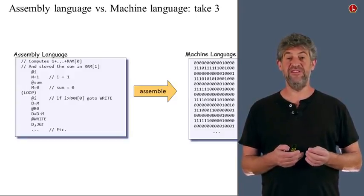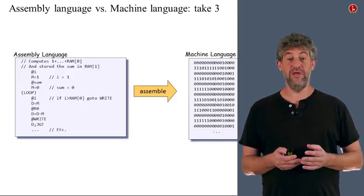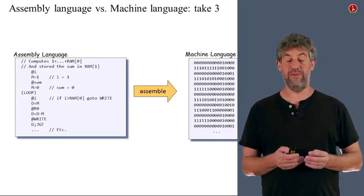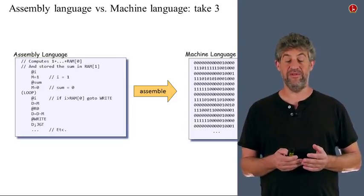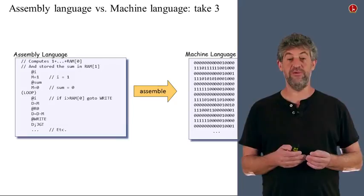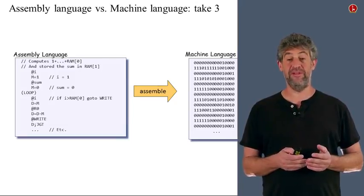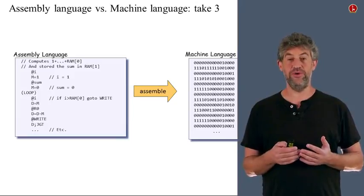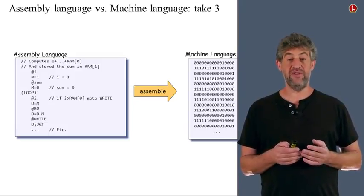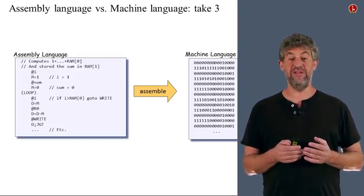You've seen this slide already twice. Two weeks ago, you saw it to focus on the left-hand side — the actual assembly language format you were supposed to program in. Last week, your perspective was what happens on the right-hand side, the machine language, since you had to construct a computer that can execute the ones and zeros on the right. Our focus this week is going to be in the middle.